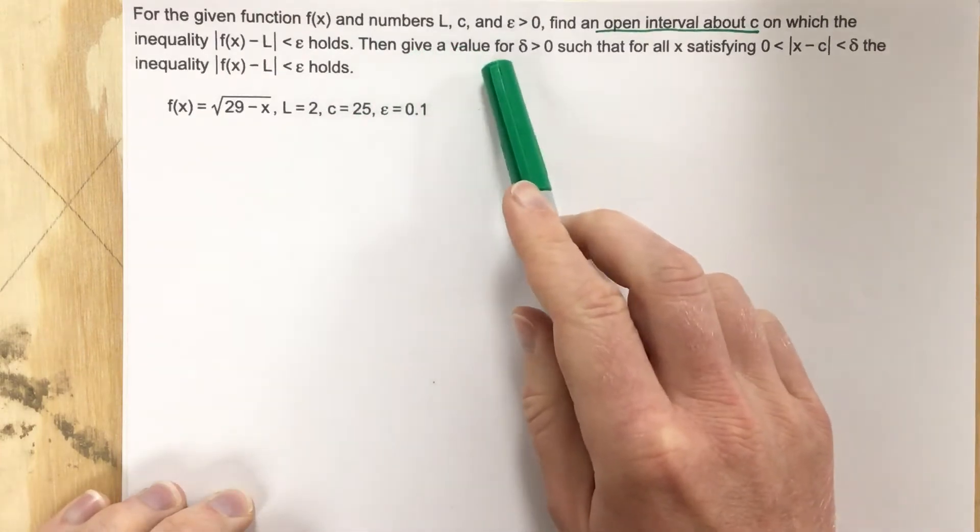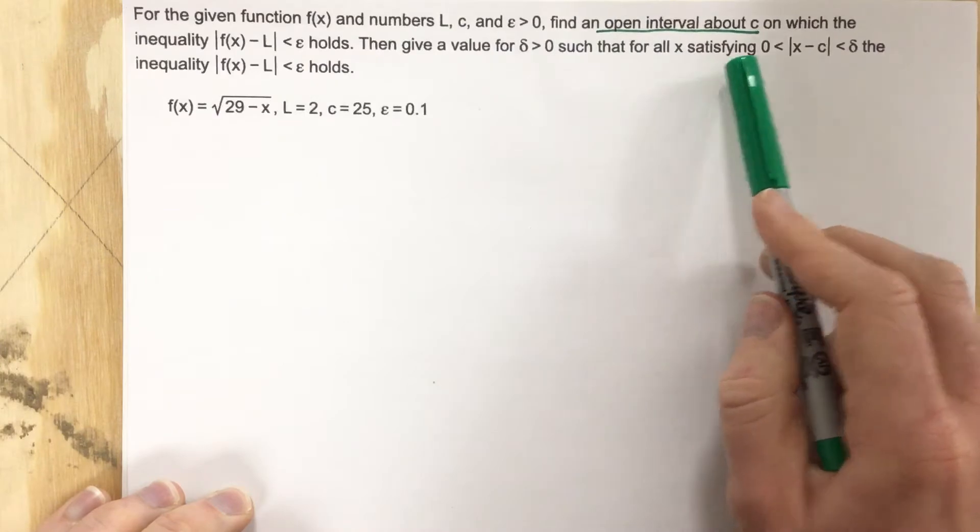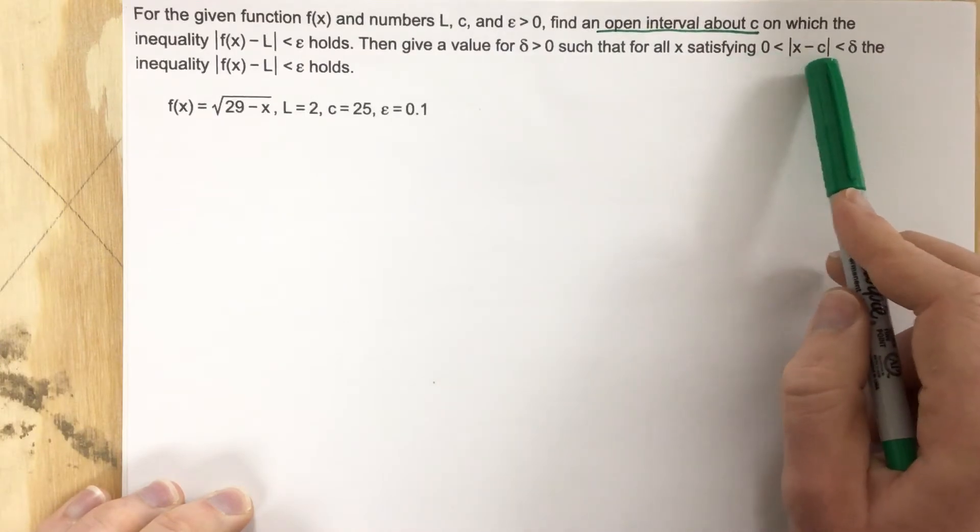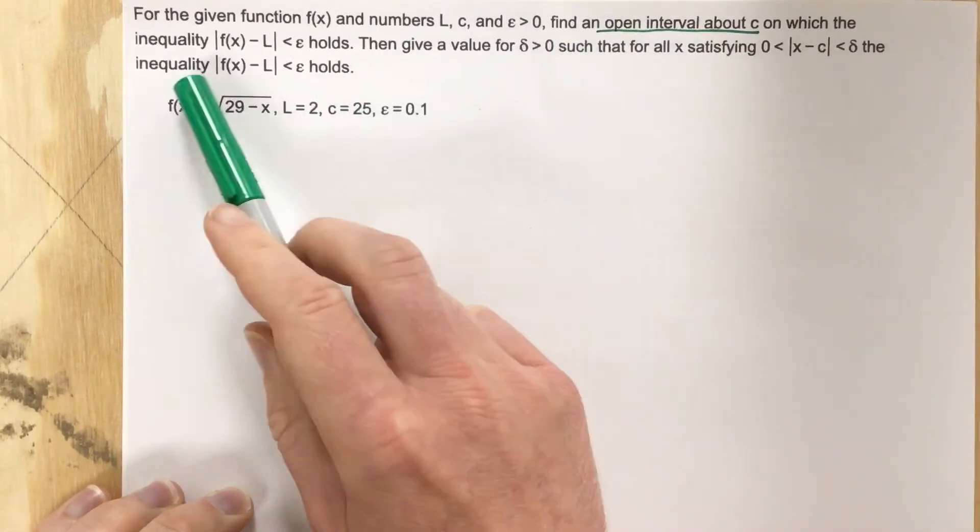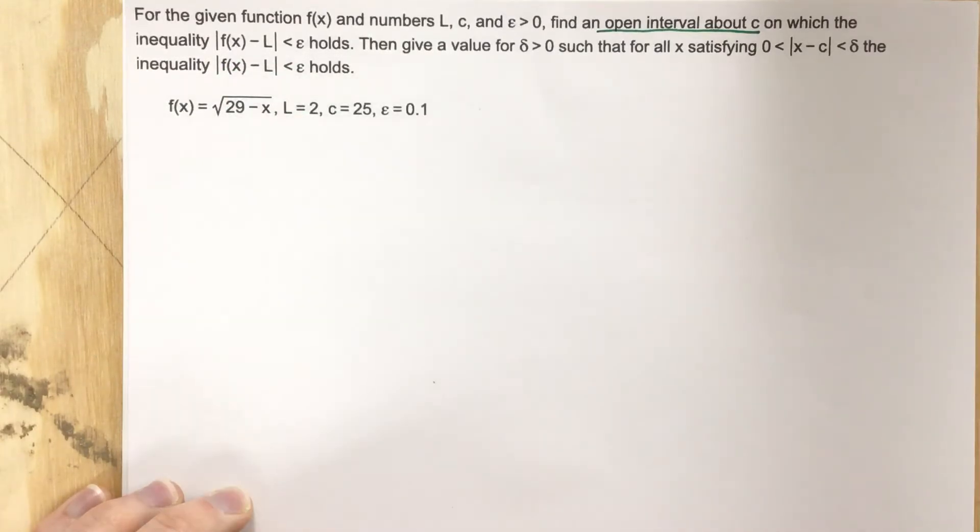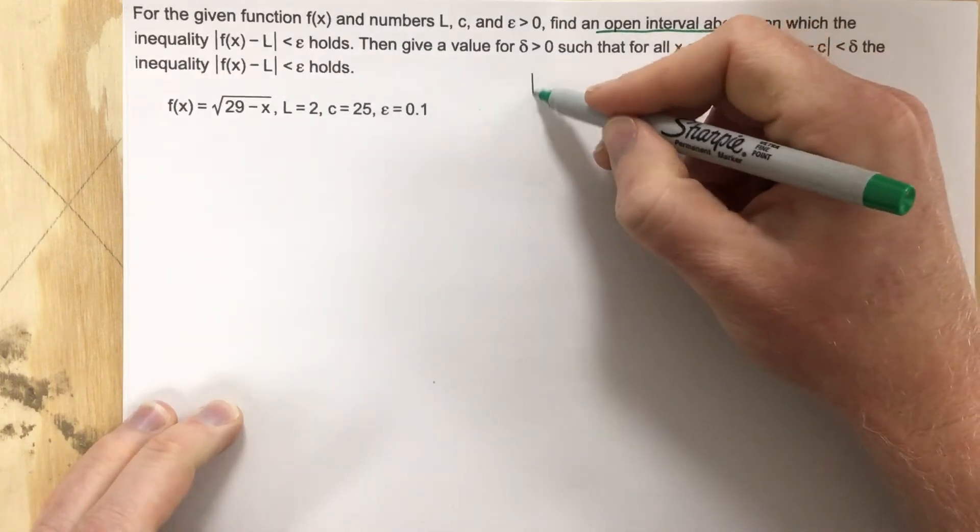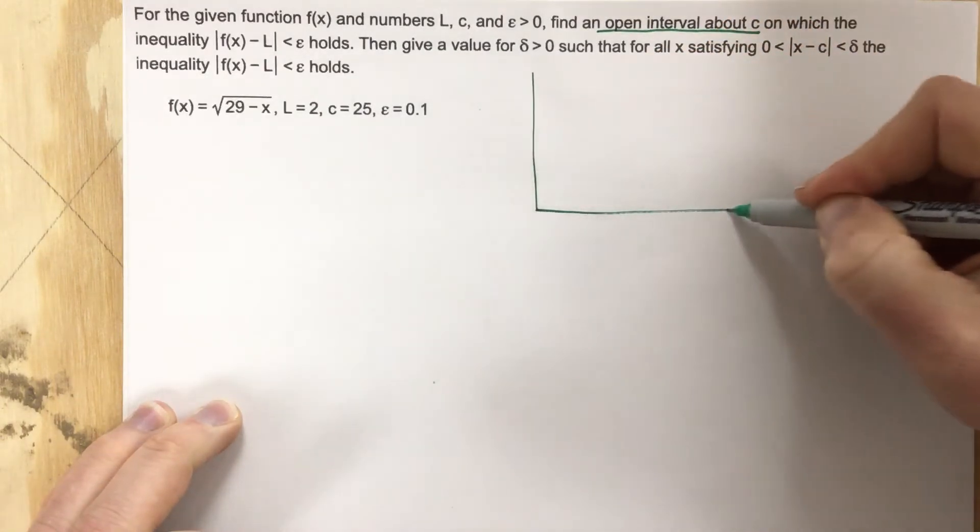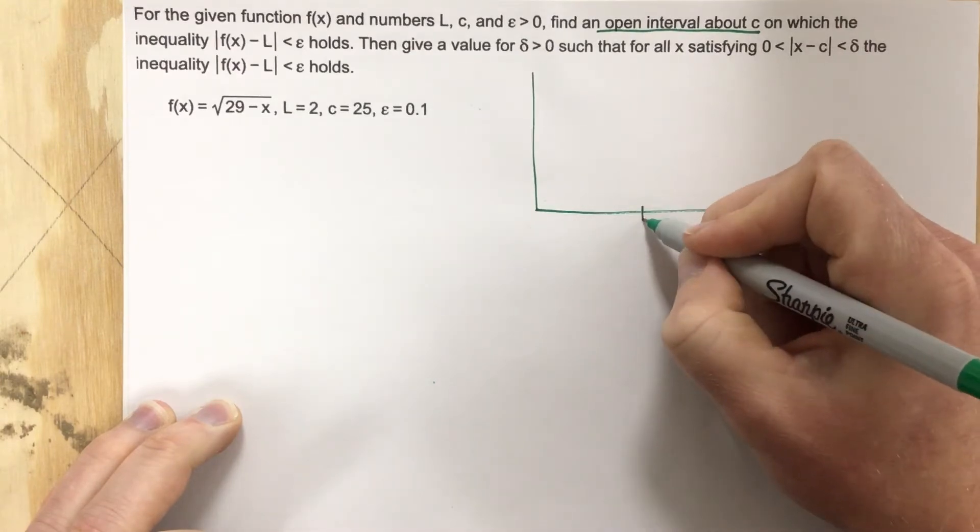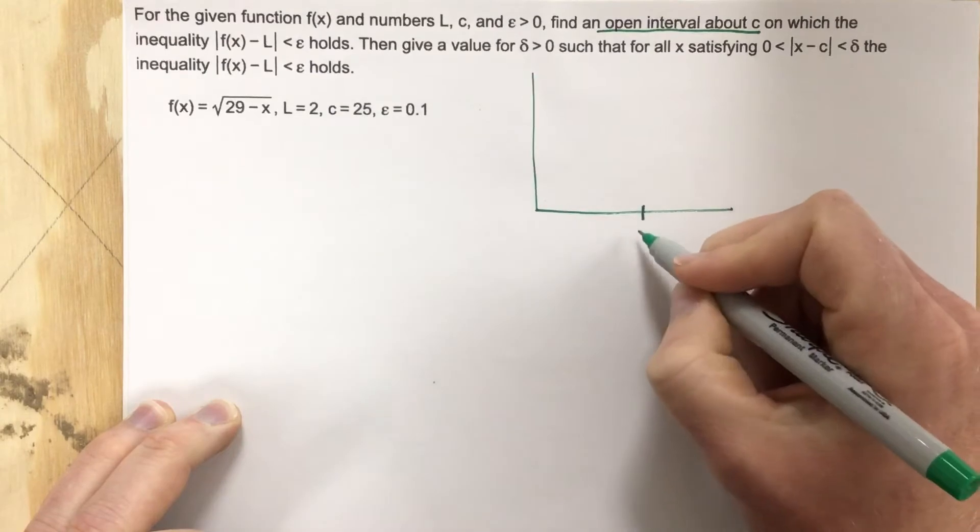Then give a value for delta greater than 0, such that for all x satisfying 0 < |x - c| < delta, the inequality holds for the y values less than epsilon. So if we draw this picture, they're giving us a spot c. Let's look at our information. They give us c is 25.